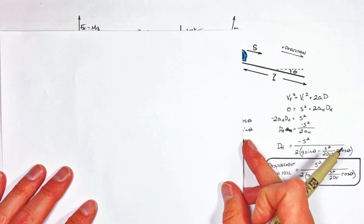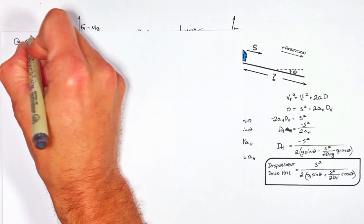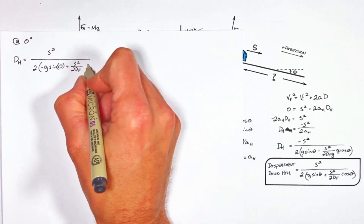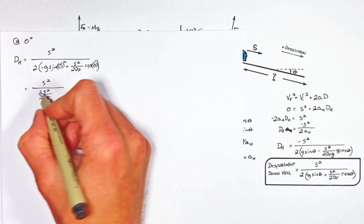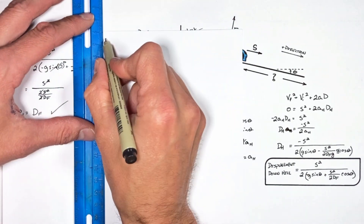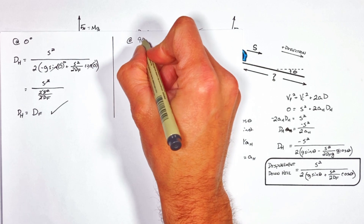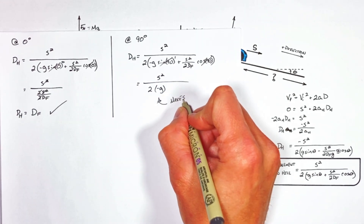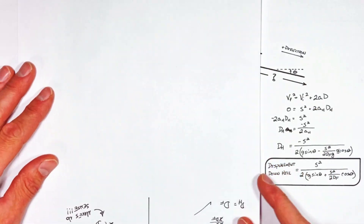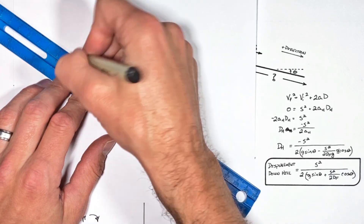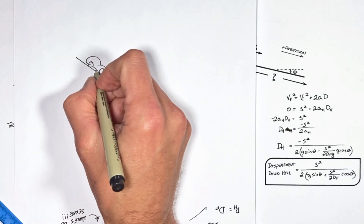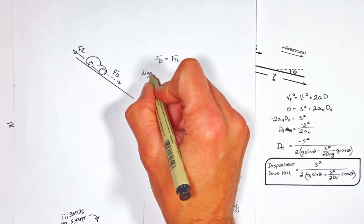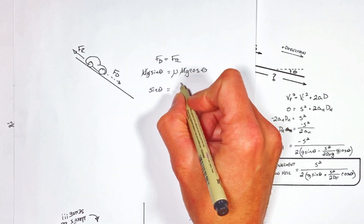To check this equation, let's look at some different values for theta, starting with extremes. First, with the hill completely flat — theta equals 0 degrees — putting that into our equation, the whole thing boils right back down to the original stopping distance of the car. Now going to the other extreme, if the hill were a wall tilted at 90 degrees, something really interesting happens — there are limitations to this equation. If we tilt the hill to just the right angle, the force down the hill equals the friction force and they cancel out. Above that angle, the force down the hill always exceeds the friction force, and the car will never be able to stop. Setting the force down the hill equal to friction, we can find the steepest angle at which the car can still stop.